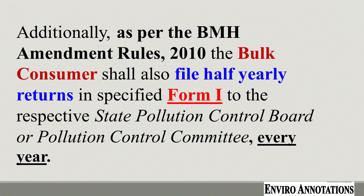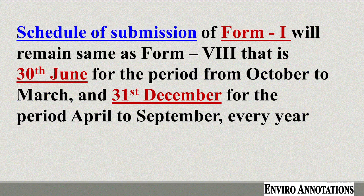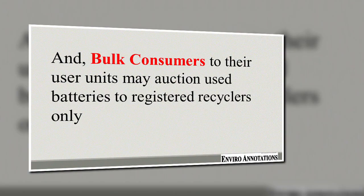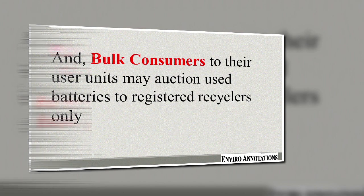Additionally, as per the BMH Amendment Rules 2010, bulk consumers need to submit Form 1 to their respective State Pollution Control Board or Pollution Control Committee. The dates of submission of Form 1 are the same as Form 8 — that is, 30th June and 31st December. Bulk consumers at their user units may auction used batteries to registered recyclers only. Thank you for watching this video.